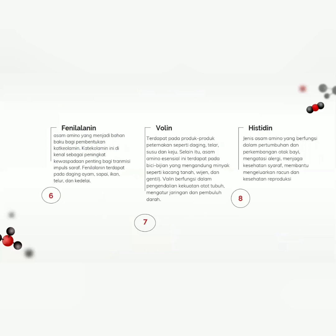Selanjutnya ada fenilalanin, yakni asam amino yang menjadi bahan baku pembentukan katekolamin. Katekolamin ini sebagai peningkat kewaspadaan bagi transmisi impuls saraf, terdapat pada ikan, daging, ayam, telur, dan kedelai. Valin ini terdapat pada produk-produk peternakan seperti daging, telur, susu, dan keju, serta pada biji-bijian yang mengandung minyak seperti kacang tanah, wijen, dan gandum. Valin berfungsi dalam pengendalian kekuatan otot tubuh, mengatur jaringan, dan pembuluh darah. Histidin, yakni jenis asam amino yang berfungsi dalam pertumbuhan dan perkembangan otak bayi, mengatasi alergi, menjaga kesehatan saraf, membantu mengeluarkan racun, dan kesehatan reproduksi.